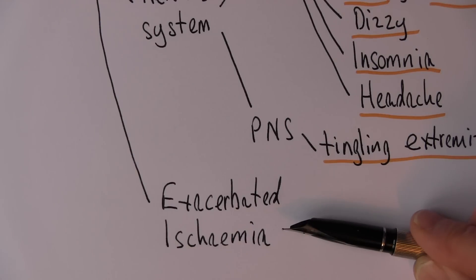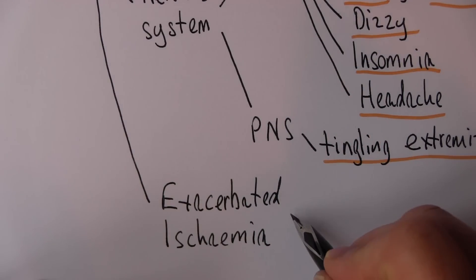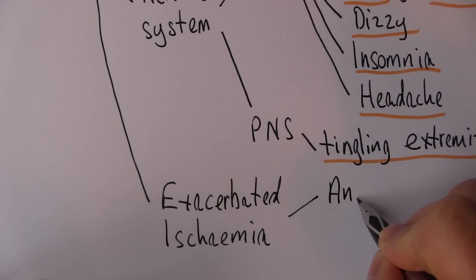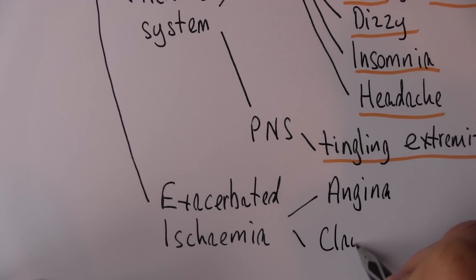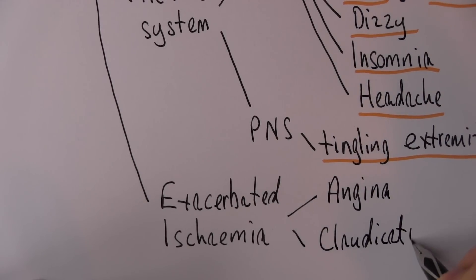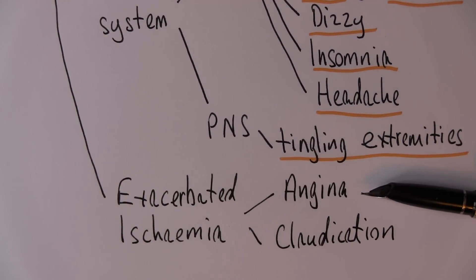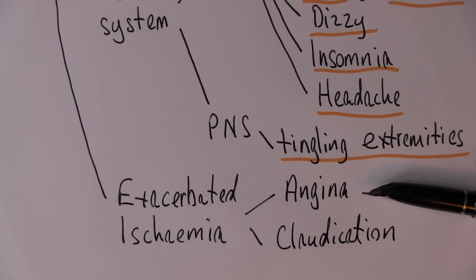Particularly if there's any underlying angina or claudication, these are made worse. So angina is the pain caused by myocardial ischemia, usually caused by atherosclerosis of the coronary arteries. And if the myocardium is hypoxic, then the metabolism can change from aerobic to anaerobic.